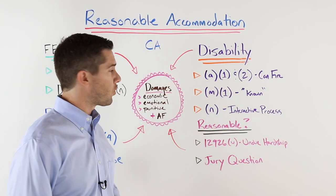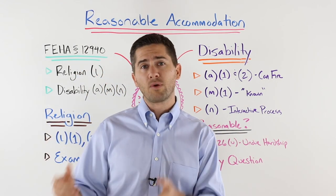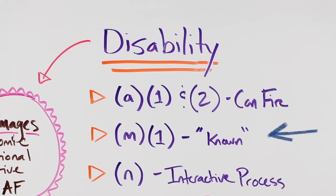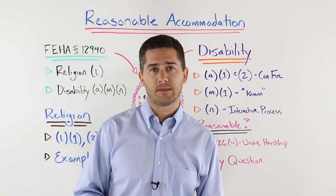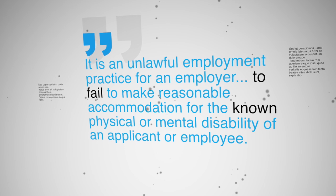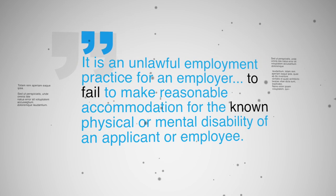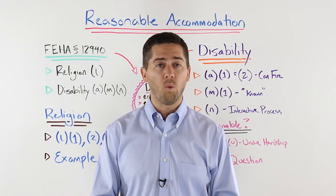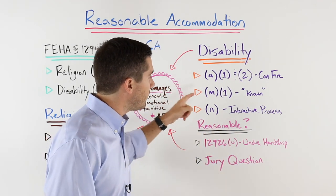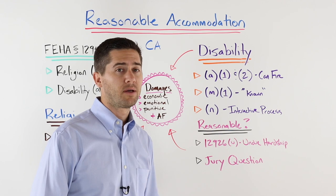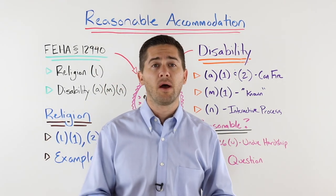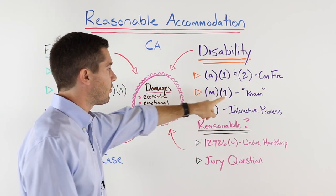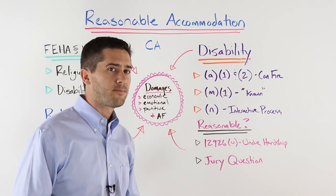But if the employee cannot perform the essential functions of the job with a reasonable accommodation, then the employer is allowed to fire them. Subsection (m)(1) of that same statute further clarifies: employers are required to provide a reasonable accommodation if they know of the physical or mental disability and a reasonable accommodation is available. Basically, the employee doesn't even necessarily have to ask for the accommodation — the employer cannot hide behind the fact that the employee never asked. If they know about the disability, they can't fire that employee for it.